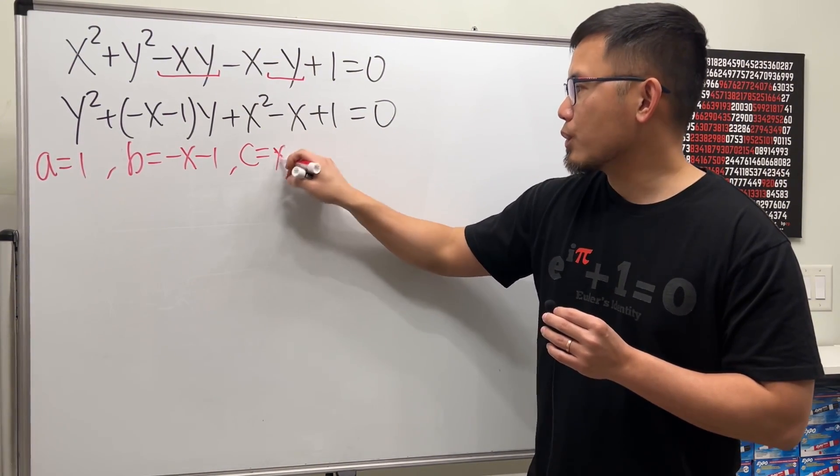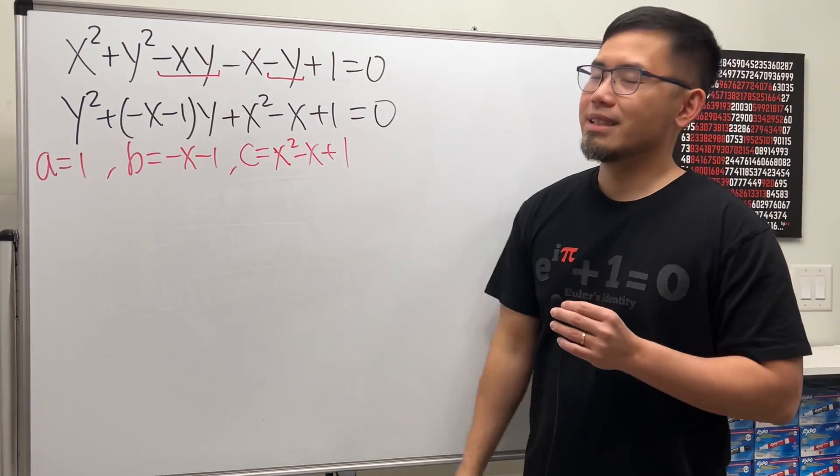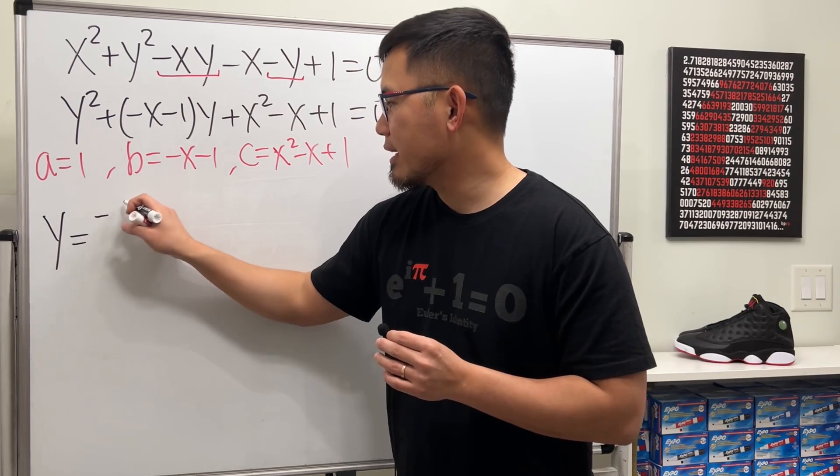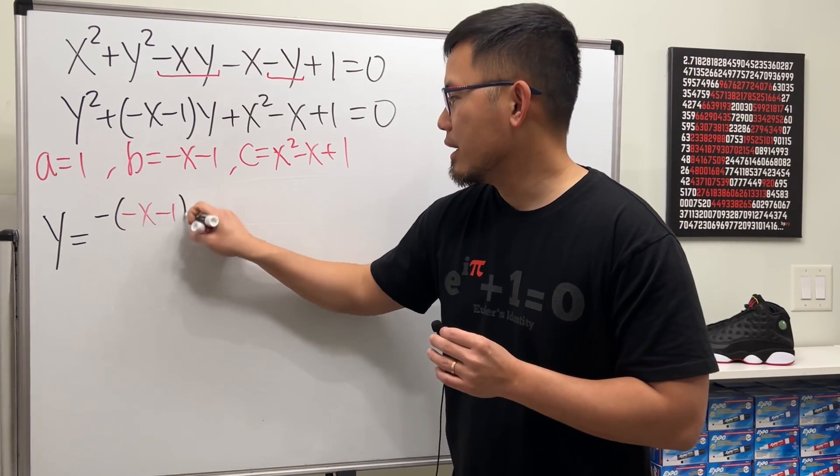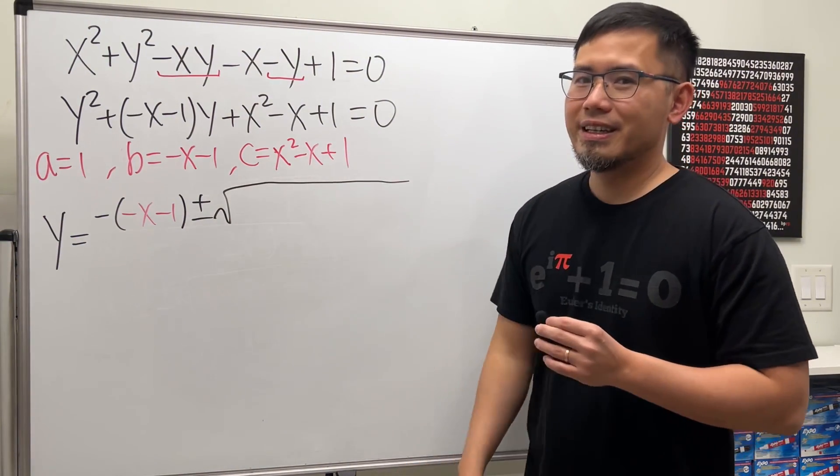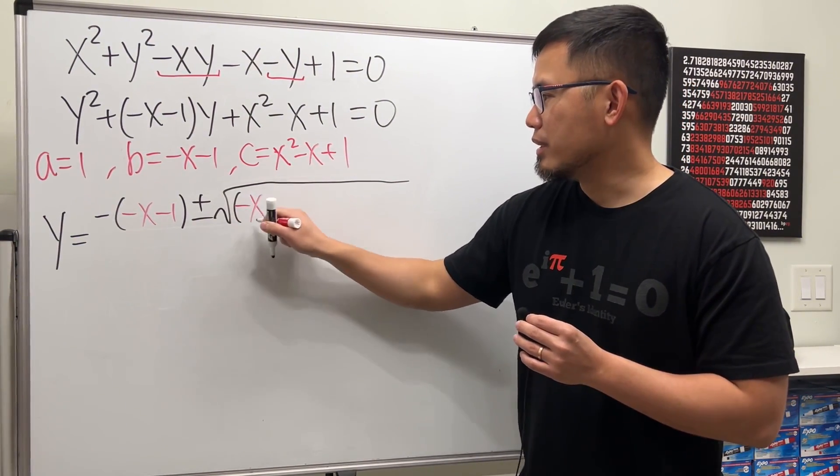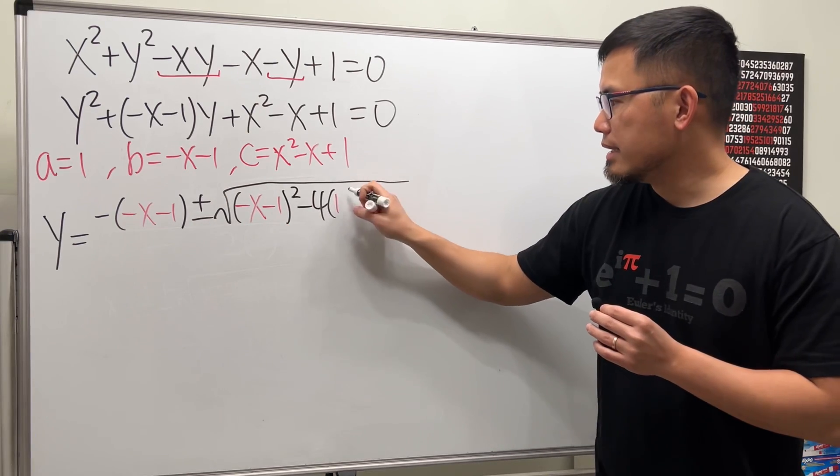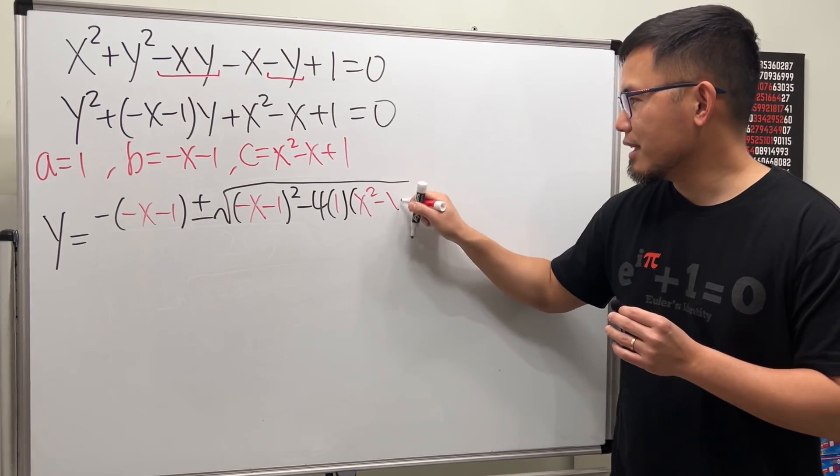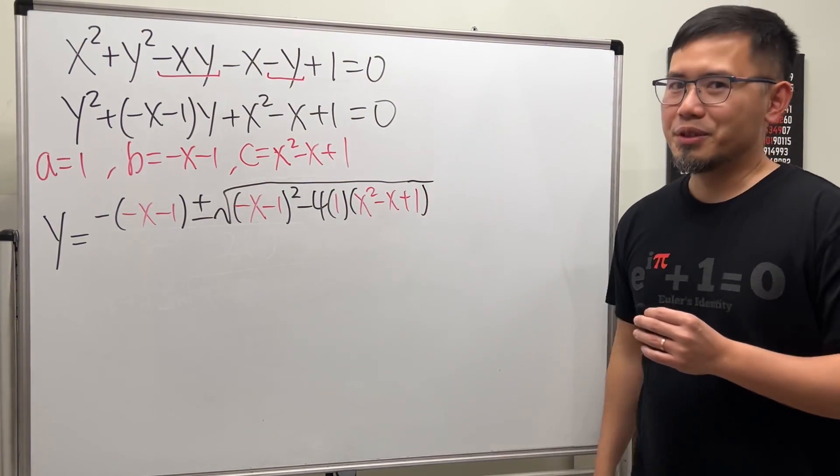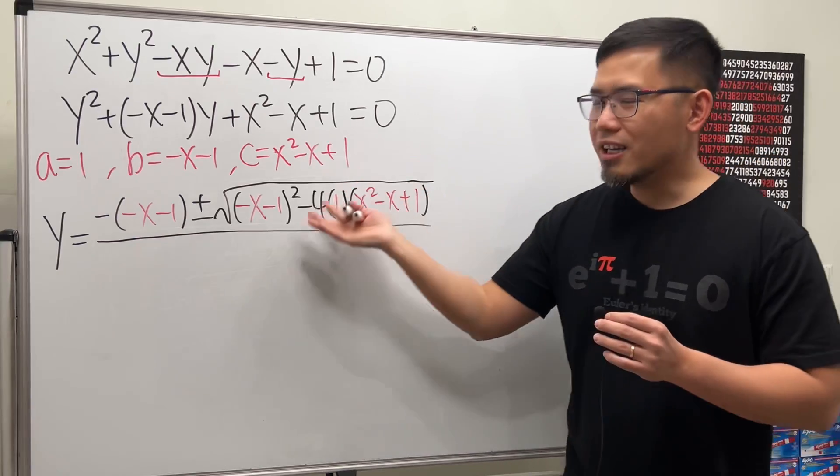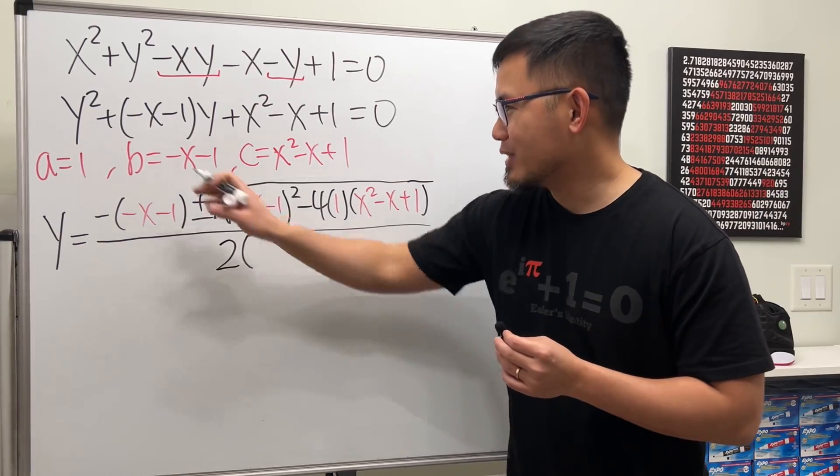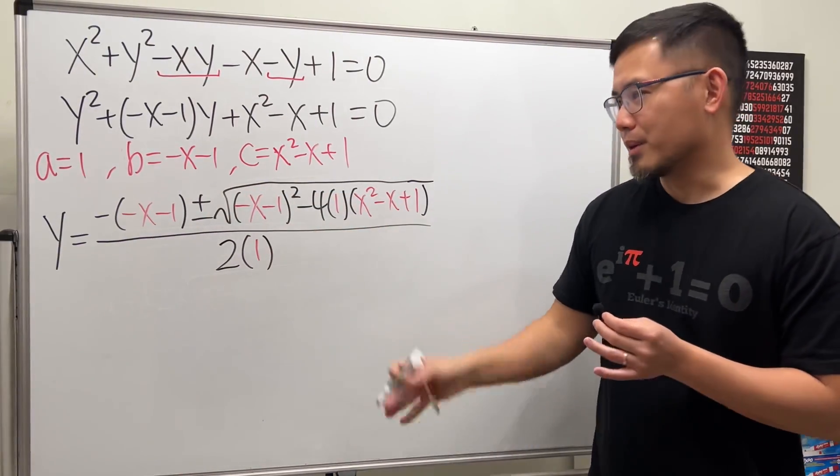Now let's just go ahead and use the quadratic formula. Y right here will be equal to negative b, which is negative of negative x minus one, and then do the plus or minus and then the square root, and then inside is b squared, so negative x minus one squared minus 4ac. A is one and c is that x squared minus x plus one. I know it's so strange because we're trying to solve a quadratic equation but instead of the quadratic formula we have another quadratic expression, but anyway though, over two times a which is two times one.